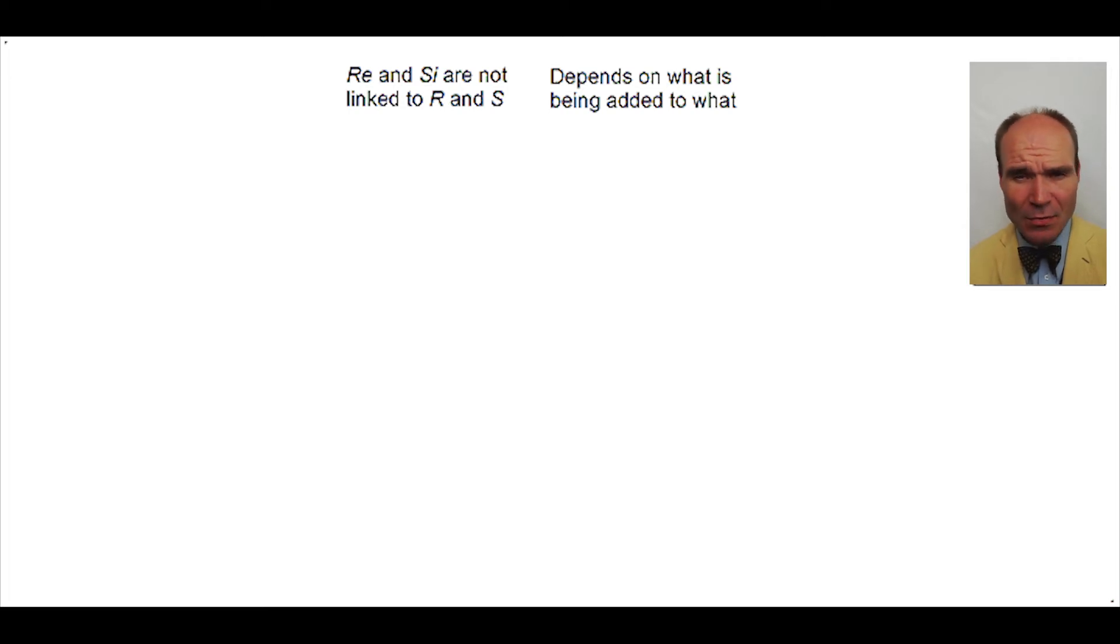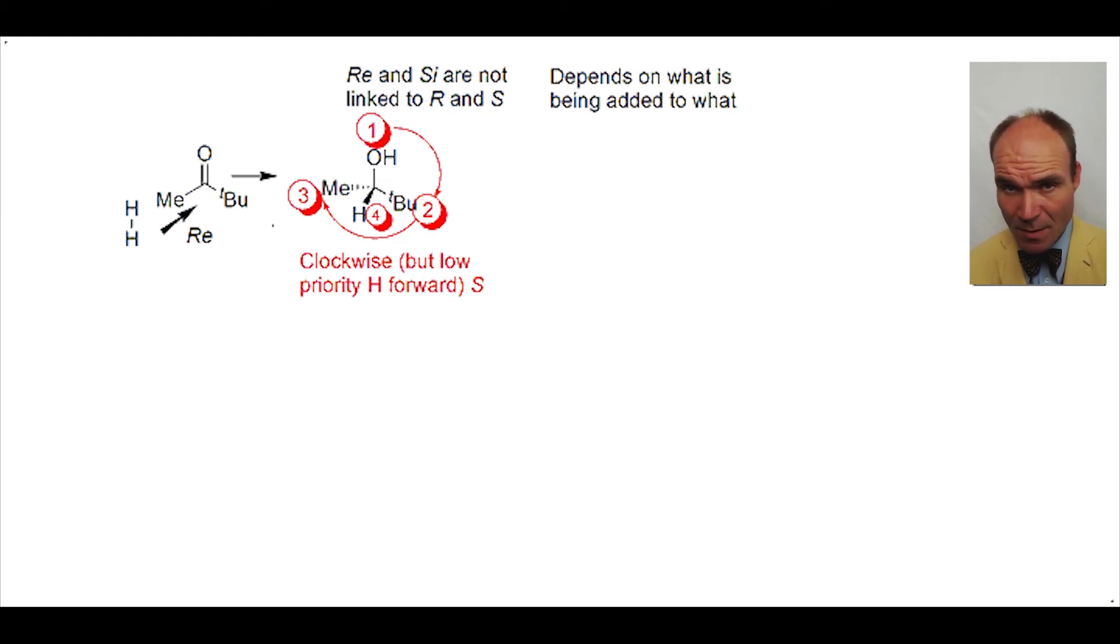As an example let's look at this ketone. We will carry out a hydrogenation with hydrogen approaching the Re-face of the ketone. This produces an alcohol and after we've applied the priorities to the substituents we can go from the highest priority to the third highest priority with a clockwise movement. However the lowest priority is forwards not backwards. Thus here clockwise relates to the S descriptor.